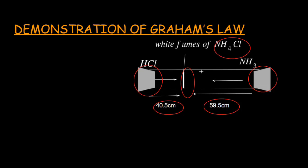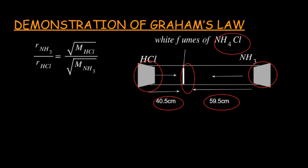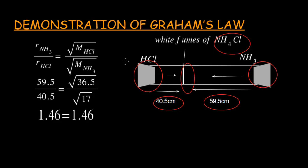Now apply Graham's equation to this data. Rate of NH₃ divided by rate of HCl equals the square root of the molar mass of HCl over the square root of the molar mass of NH₃. The molar mass of HCl is 36.5 and for NH₃ it is 17. Putting these values into the equation, both sides of the equation equal 1.46, confirming Graham's law.